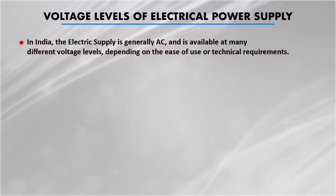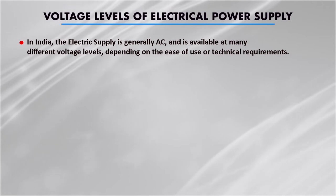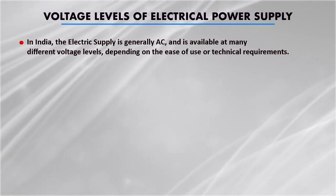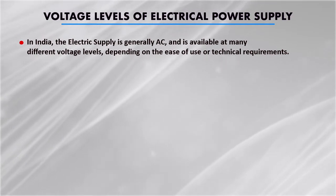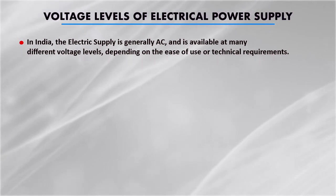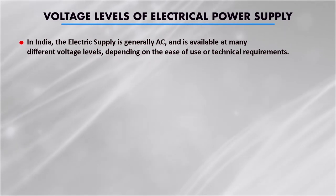In India, the electrical supply is generally AC, or alternating current, which works on AC current or voltage. It is available at many different voltage levels depending upon the ease of use or technical requirements. You can use both AC power or DC, but generally AC is more popular. The lowest voltage level the retail consumer gets electrical power at is 230 volt, and this is the single phase 2-wire supply. Barring this single phase supply and some occasional high voltage DC lines, all other supplies are 3-wire 3-phase.